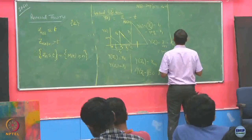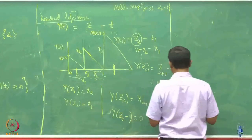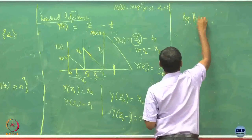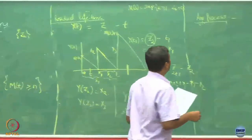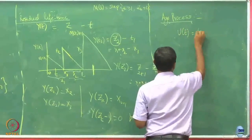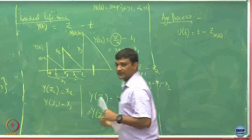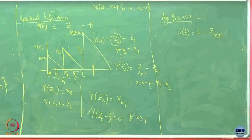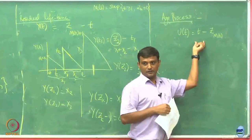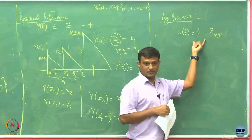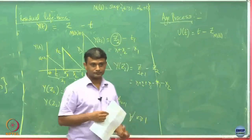Now let us define another process, called the age process. U(t) is defined as t minus Z_{m(t)}. We have already argued that Z_{m(t)} ≤ t, so this quantity is going to be non-negative. Let us plot this.